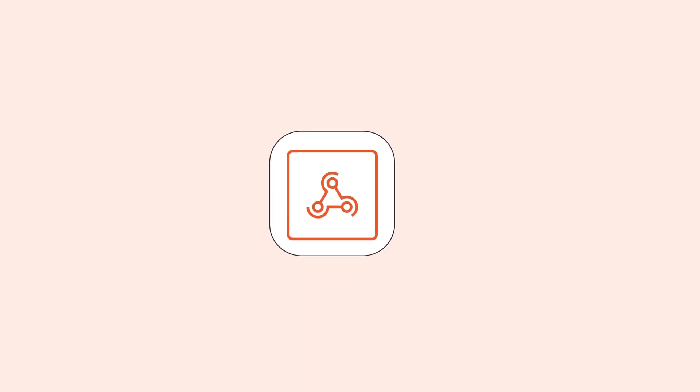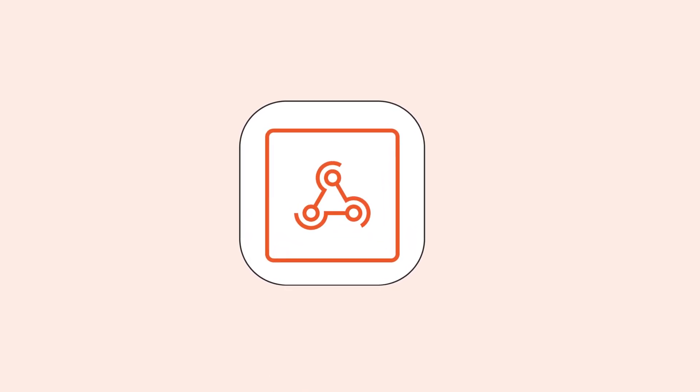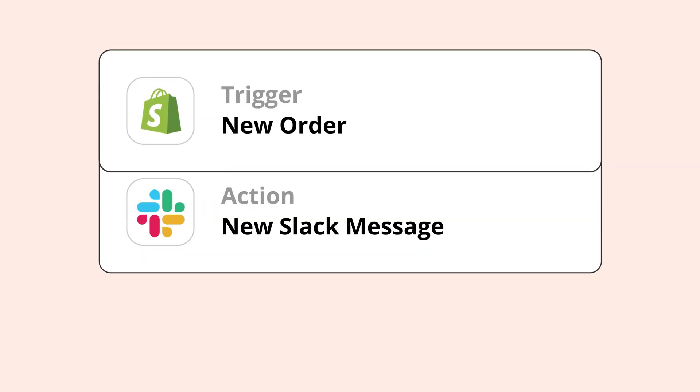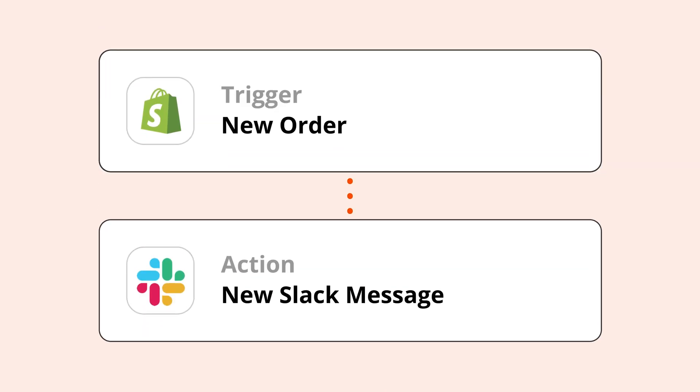If you've ever poked around in the settings of your favorite apps, you might have seen something called webhooks. They can be a tricky concept, so let's break it down. Webhooks are just another way that apps can send messages or information to other apps automatically. For example, how your ecommerce store notifies you in Slack about your new orders.